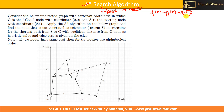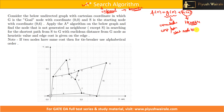The evaluation function f(n) equals g(n) plus h(n), where h(n) is basically the heuristic value and g(n) is basically the cumulative cost from the starting node to the current node n.